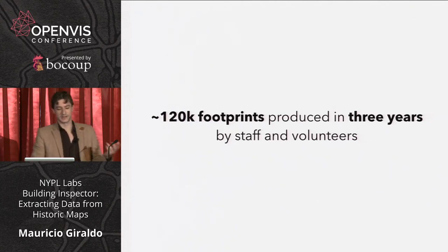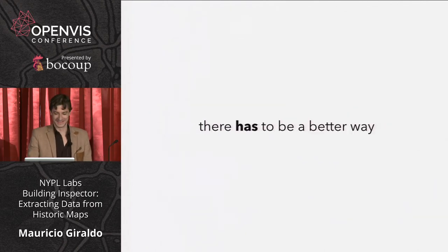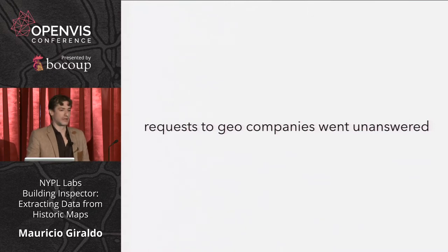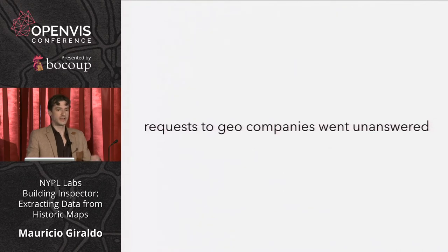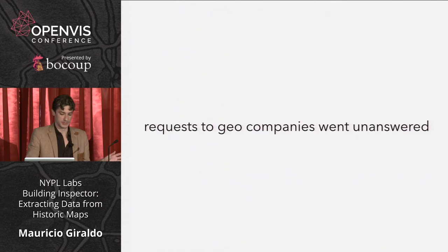There has to be a better way. We need to find out if this is possible computationally. Lots of companies and people come through the New York Public Library, and every time we get an opportunity with somebody who has done some work in GIS, we ask: these maps are pretty simple — is there something you can share? Do you know a way of extracting automatically the data out of this? And nobody would really commit — they'd say we'll get back at you.